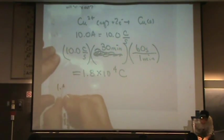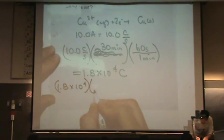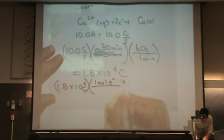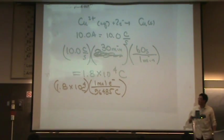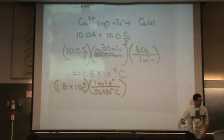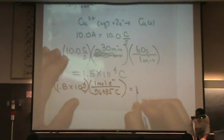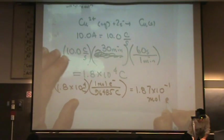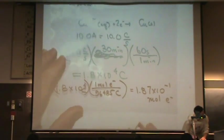If you take this 1.8 times ten to the four, and that's in coulombs, you know F. Remember F is one mole of electrons for every 96,485 coulombs. So using the constant F, actually dividing by F, I can turn this into moles of electrons. It's 1.87 times ten to the minus one moles of electrons.